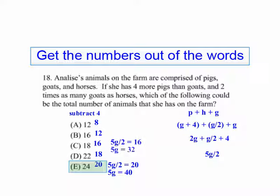Five goats over two equals sixteen. Five goats equals thirty-two. Five doesn't go evenly into thirty-two. Five halves of goats equals eighteen. Five goats equals thirty-six. Five won't go evenly into thirty-six.